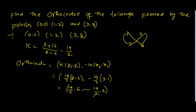Here the 2 cancels: 19/2 into 6 gives 57, and minus 19/2 into 2 gives minus 19. This is the orthocentre of the triangle: (57, -19).